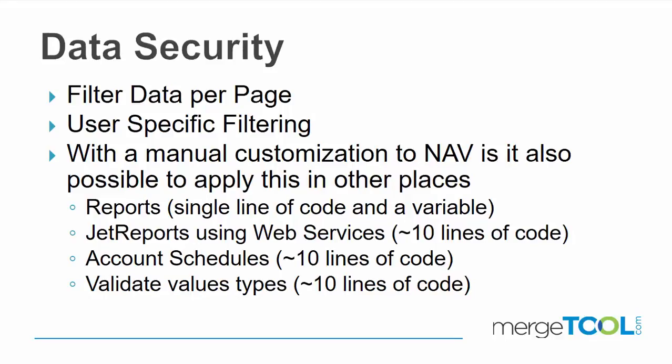Data security is part of the easy security solution. It allows you to filter data for individual pages, and you can also specify variables used in filtering, allowing user-specific data to be used. We normally filter what's shown on pages, and that applies to OData, web clients, or anything else that would show the page. It is also possible with a manual customization to add it at other places in the system. More information can be found on our website about what is required to add these features.